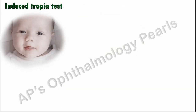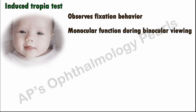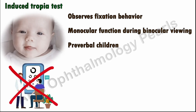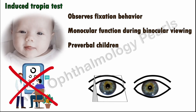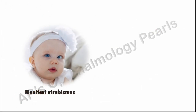The induced tropia test is a test that observes fixation behavior in order to determine monocular function during binocular viewing, with respect to possible amblyopia in pre-verbal children and those too young to cooperate with subjective vision testing. Since visual acuity measurement in these children is not possible through regular optotype testing, fixation patterns are used to determine fixation preference and possible amblyopia. The premise is that an amblyopic eye will not maintain fixation under conditions of binocular viewing. When there is manifest strabismus, the fixation pattern of the deviating eye is determined by occluding the fixing eye.